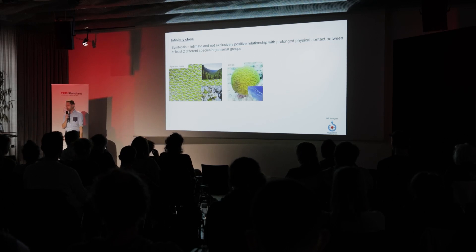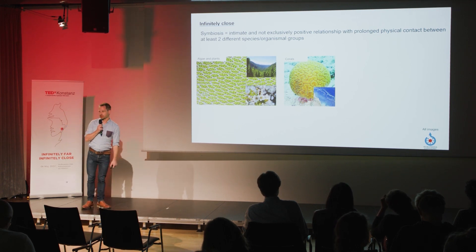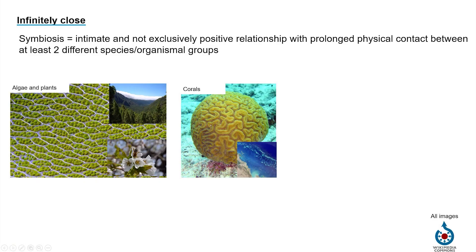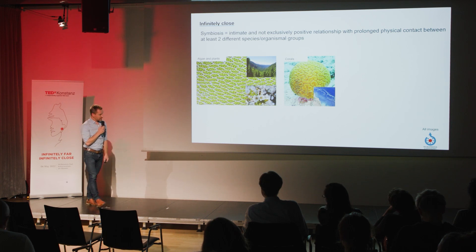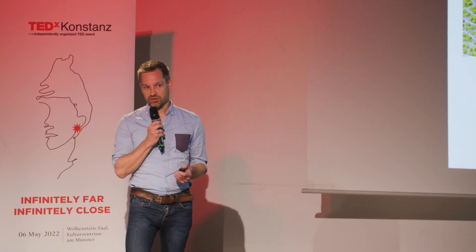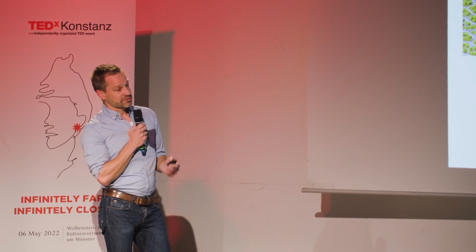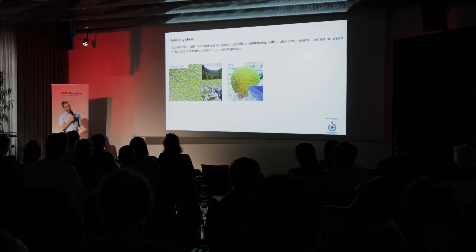The second example you probably all know — corals. A coral is actually also a symbiosis between an animal, the coral itself, and an endosymbiont living inside its cells — another photosynthetic algae. This is very successful. Corals live in environments that are very resource-limited, but this endosymbiosis allows them to live there and make these very expensive calcified skeletons, forming the big reefs we can even see from space — for example, the Great Barrier Reef at the coast of Australia.